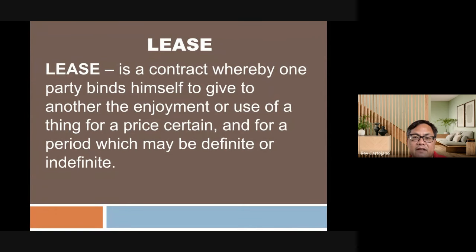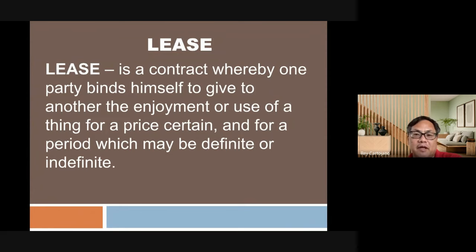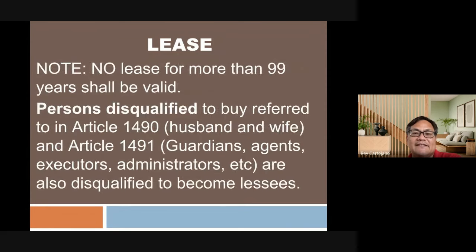The last contract is the contract of lease: one party binds himself to give another the enjoyment or use of a thing for a price certain and for a period which may be definite or indefinite. Under the Civil Code, the maximum duration is not more than 99 years.